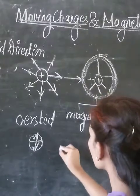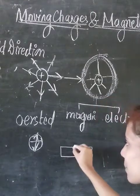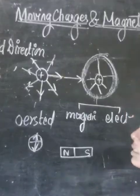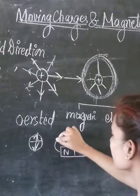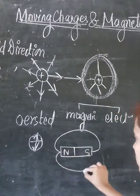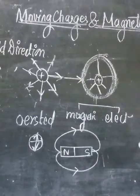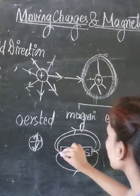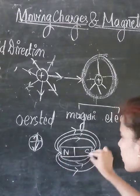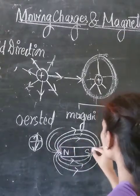Looking at the diagram of a magnet: it has two poles, the north pole and the south pole. The magnetic field lines move from the north to the south direction outside the magnet. Everyone should be familiar with this figure — the field lines are moving from north to south.